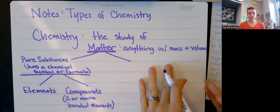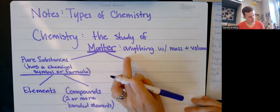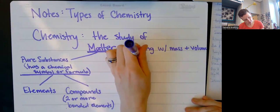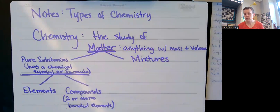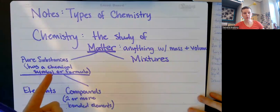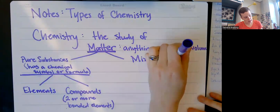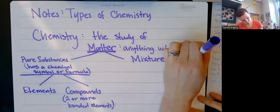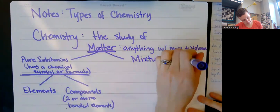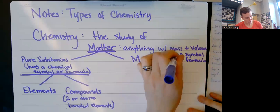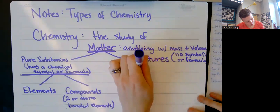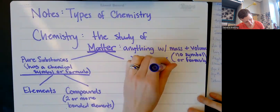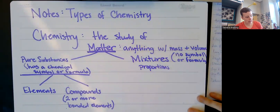Now we're going to move over to the right side of this flow chart. If it's not a pure substance, it falls into the category of mixtures. Mixtures have no chemical symbol or formula, and their proportions can change.